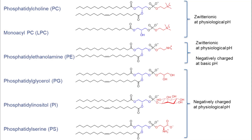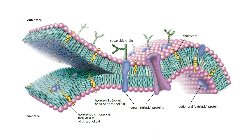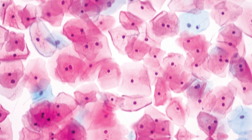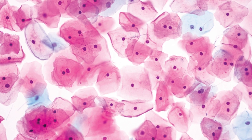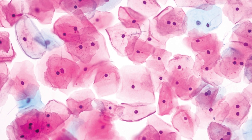There are various types of phospholipids present in cell membranes. Their varying structures and properties influence membrane fluidity, stability, and functionality, allowing cells to adapt to changing conditions and perform their specialized functions.